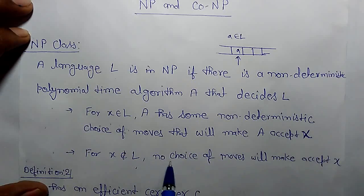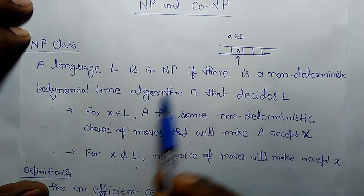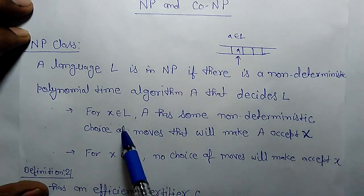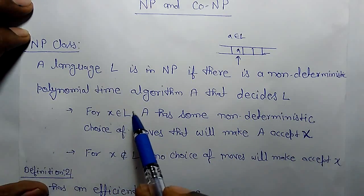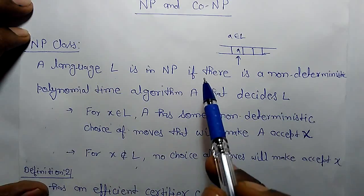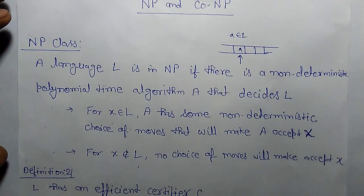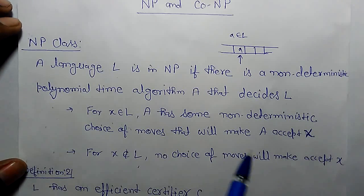This means if there is a Turing machine for a particular language and we have taken a string from that language, the algorithm A has some non-deterministic choice of moves that will make A accept x for NP class.